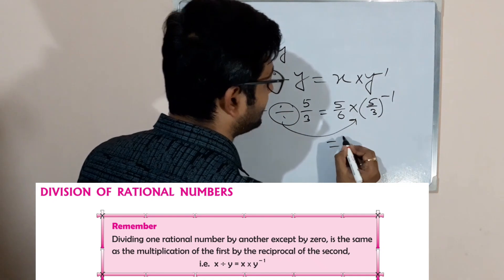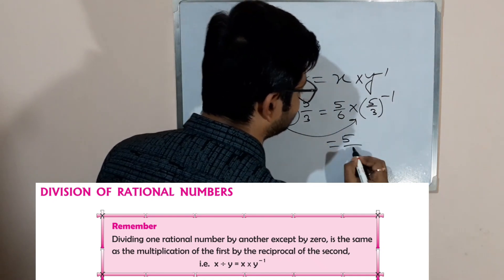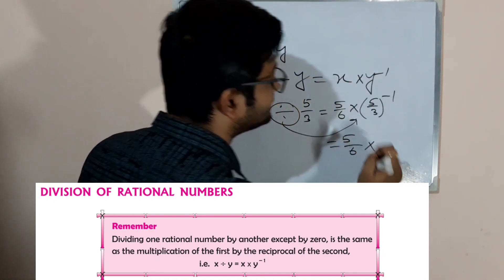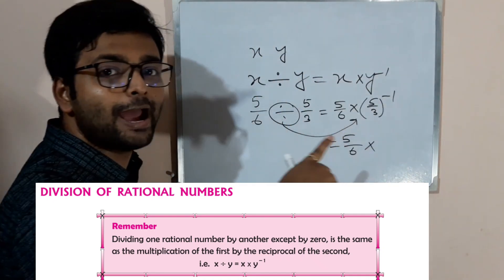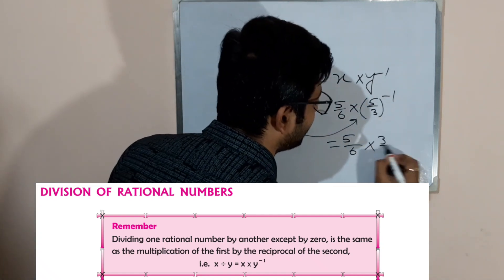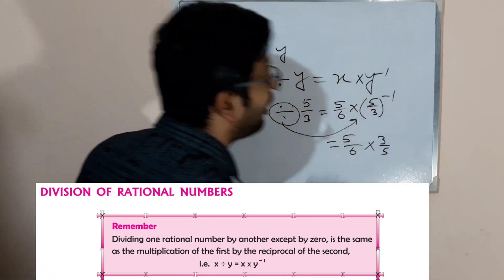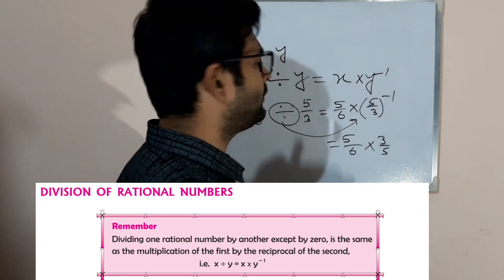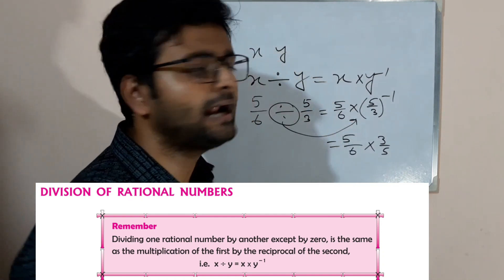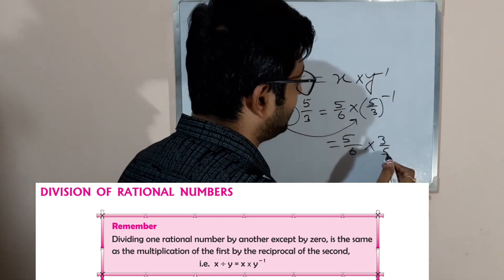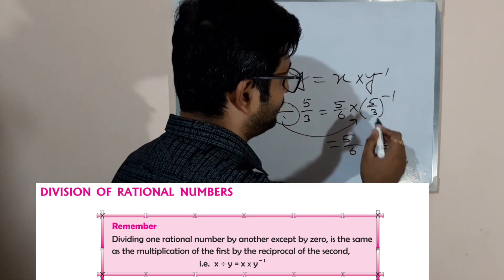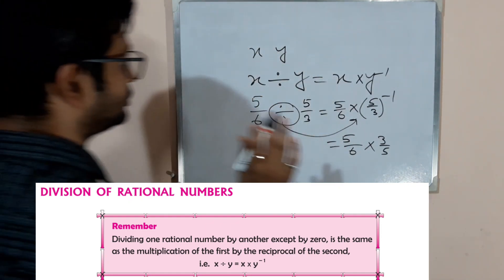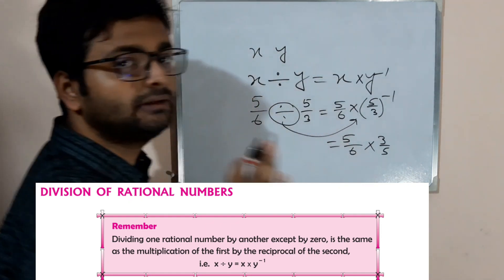As you know from the previous worksheet, inverse means the reciprocal. For example, the inverse of 3 by 5 is 5 by 3 — the numerator becomes the denominator and the denominator becomes the numerator. This is the rule of division.